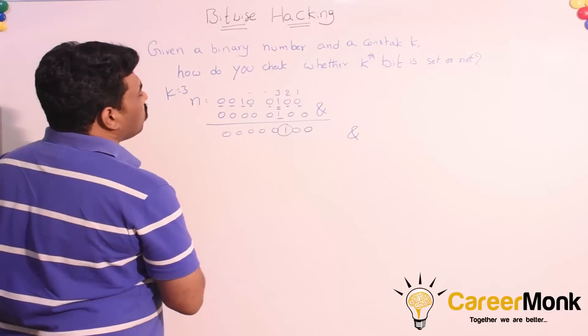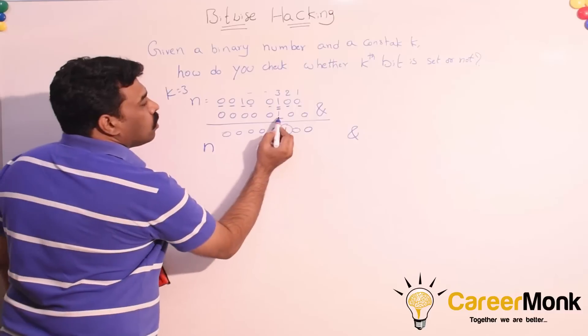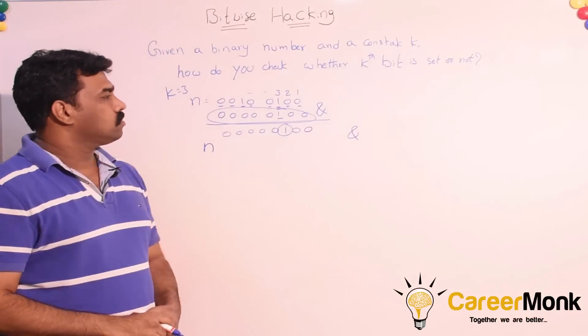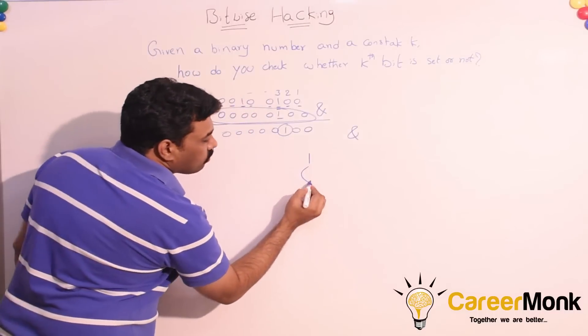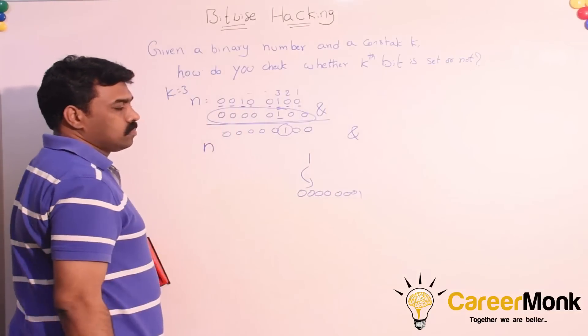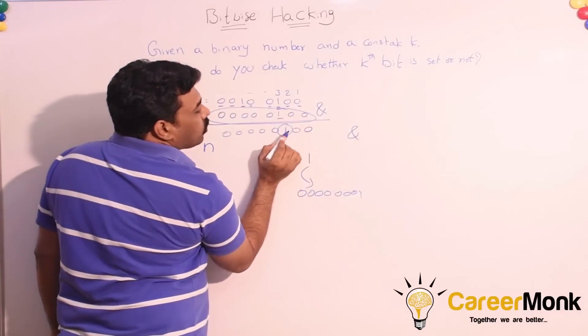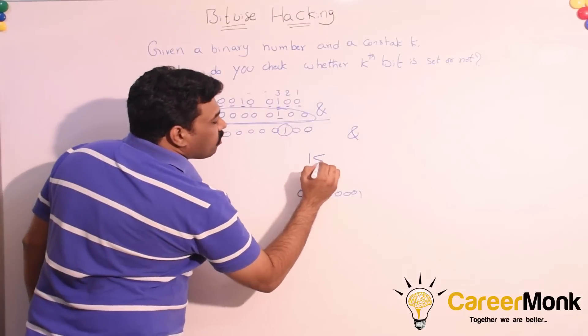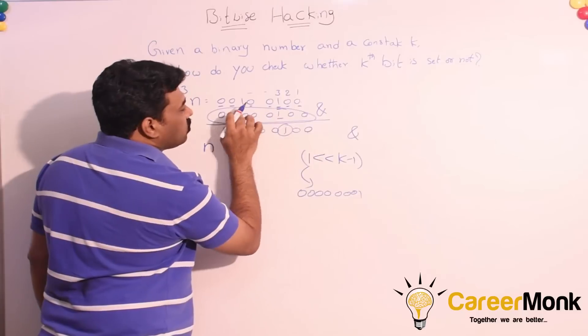How do we code this one? Given a binary number n, how do we get this value? Let us take 1, which is nothing but the binary representation of 1. Our objective is to get 1 from this position to this position, the kth bit.